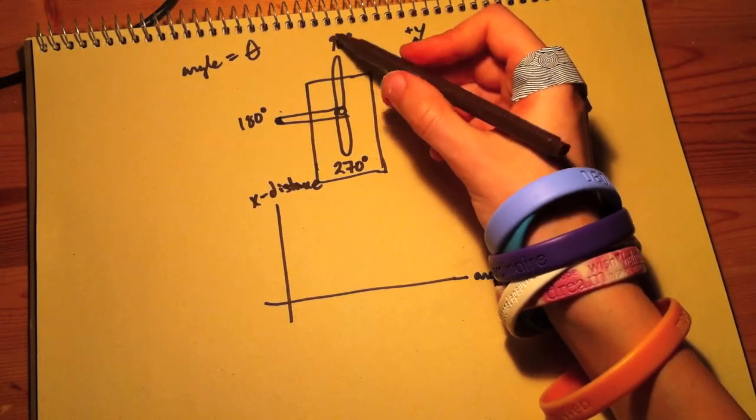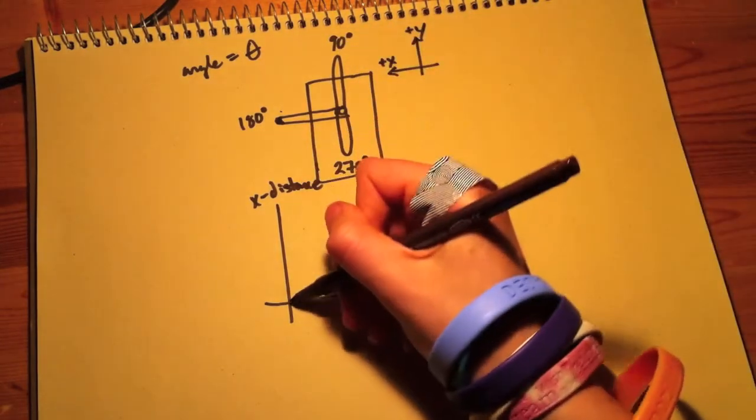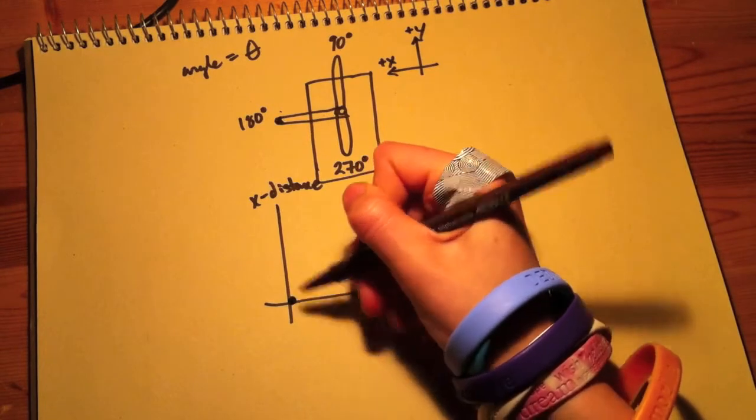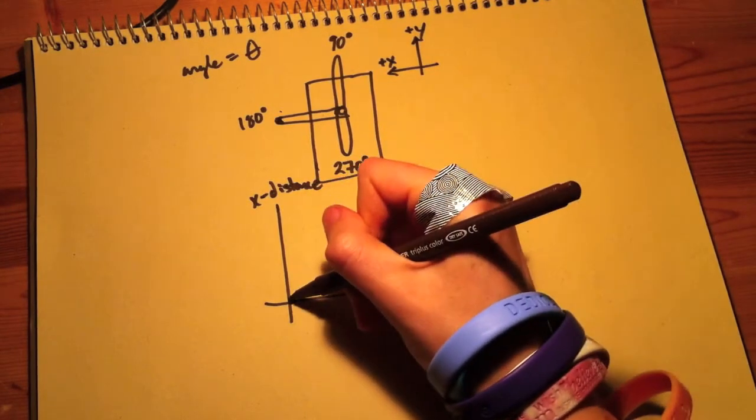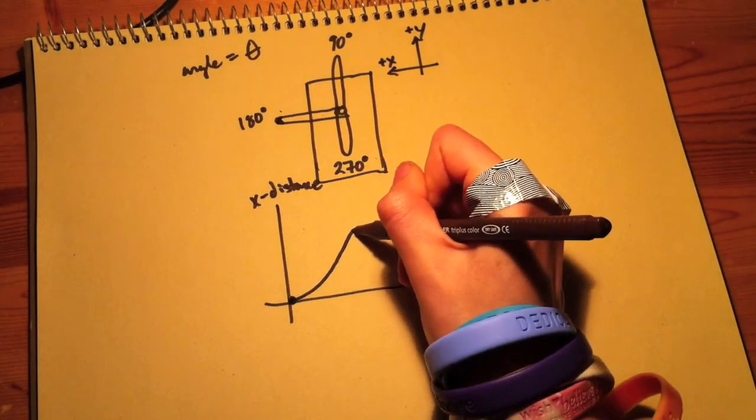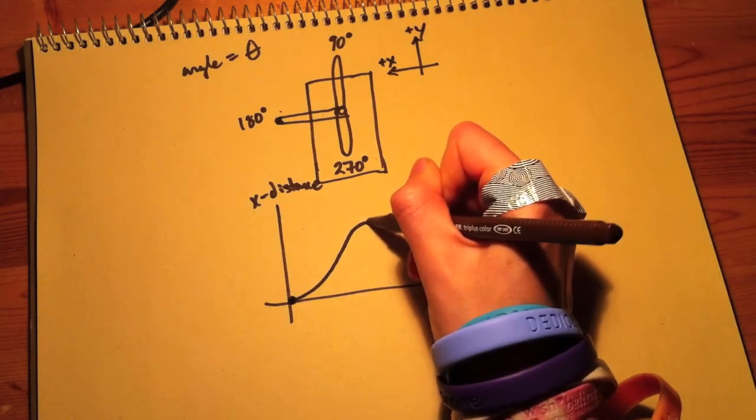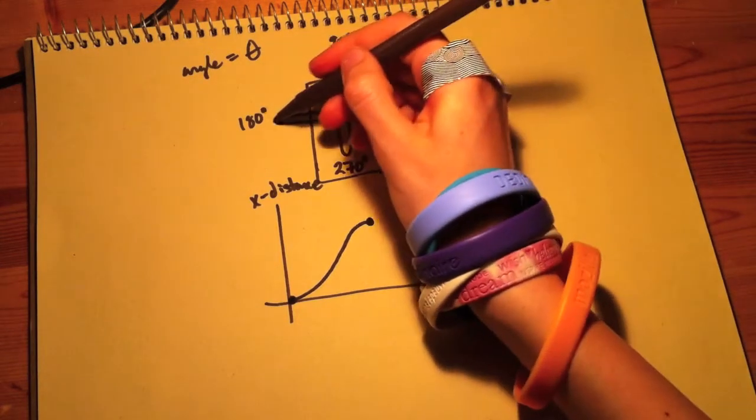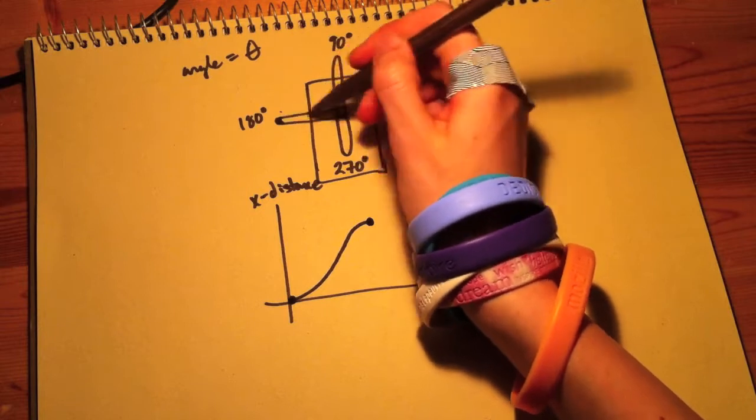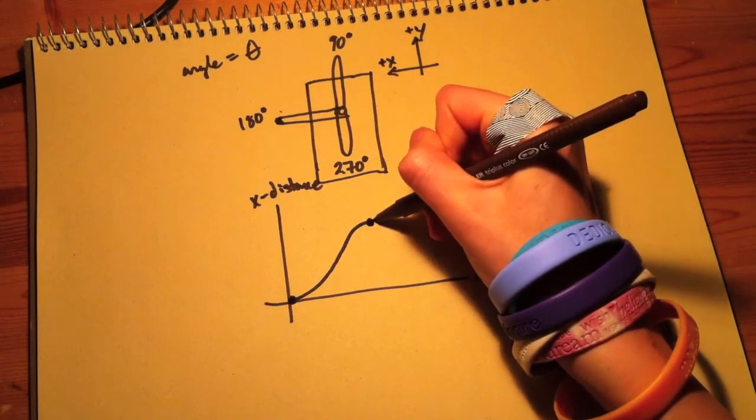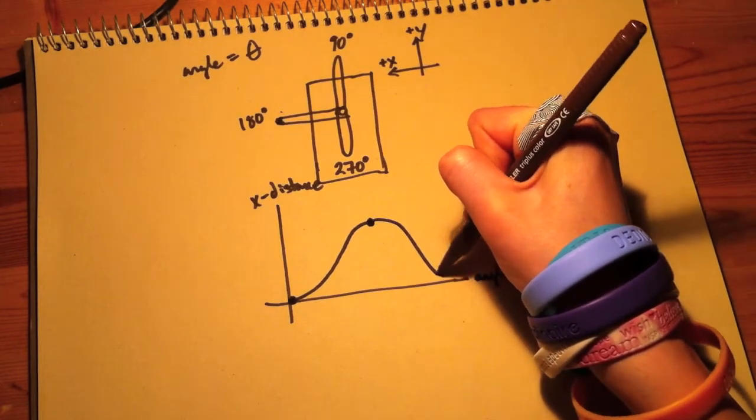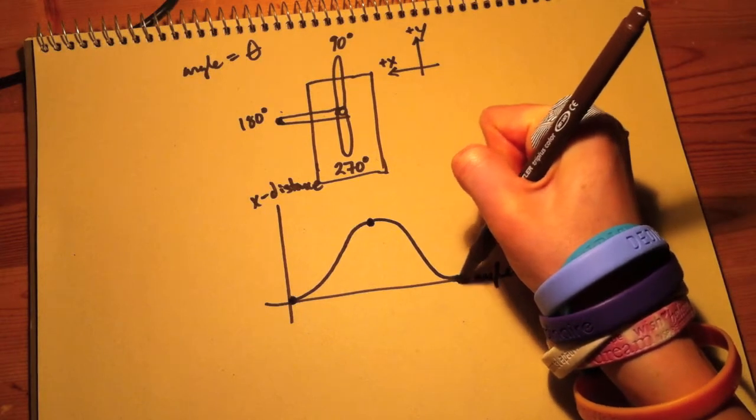So for 90 degrees, it's at zero, so we can draw that right there. And then it slowly moves when it goes to 180 up to its maximum point here. And then when it goes back down to 270, then it just goes back to zero.